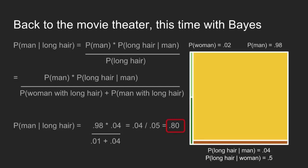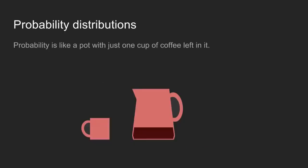This example shows the mechanics of how to get Bayes' theorem and how it works. In practice, it's usually used a little differently. To show this, we'll have to do a little bit of a detour and first talk about probability distributions.